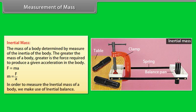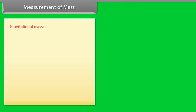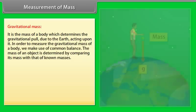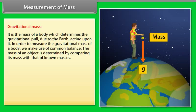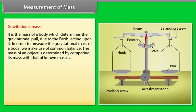Thus, a very heavy body has a larger inertial mass than a light body. In order to measure the inertial mass of a body, we make use of inertial balance. Gravitational mass: It is the mass of a body which determines the gravitational pull due to the Earth acting upon it.